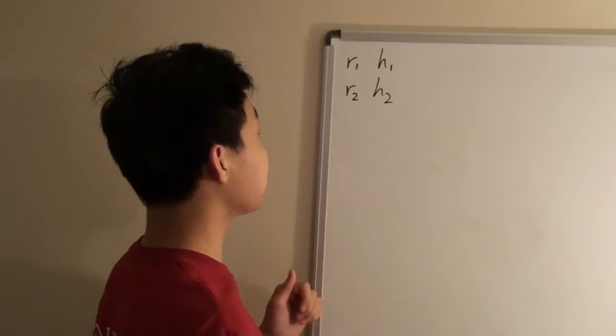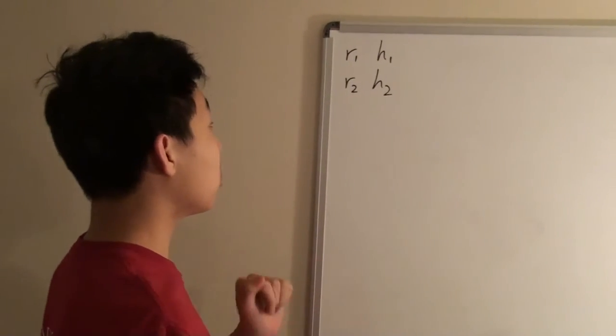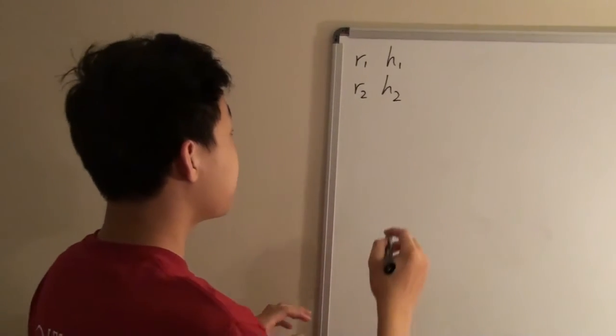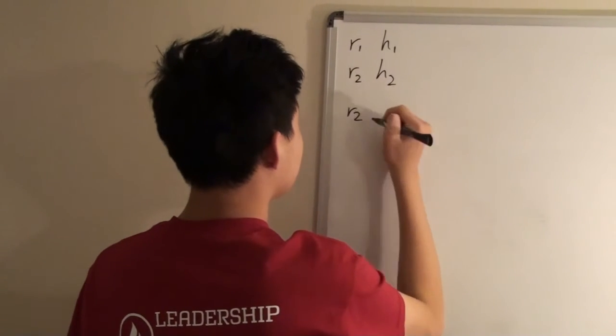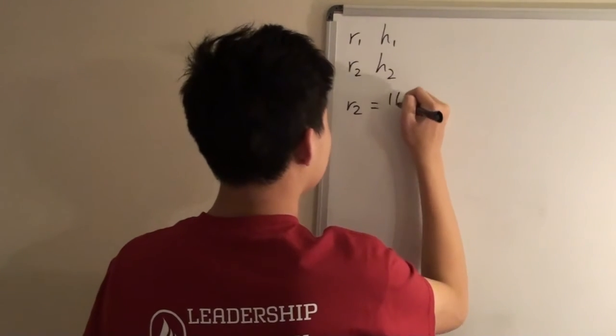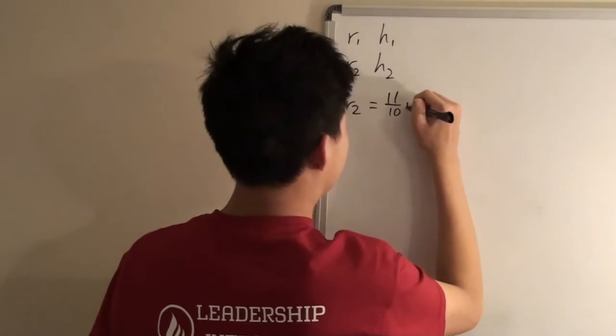The problem states that r₂ is 10% greater than r₁, which gives us the equation r₂ = 11/10 × r₁.